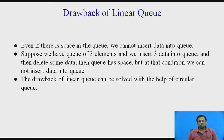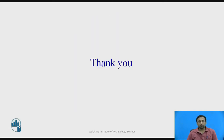The drawbacks of a linear queue: even if there is space in the queue, we cannot insert data into it. For example, if the queue size is 3 and we insert three elements then delete some, the queue has space but we cannot reuse it because we have already incremented the rear pointer and do not reinitialize it to minus 1. This memory utilization problem can be solved with the help of a circular queue.